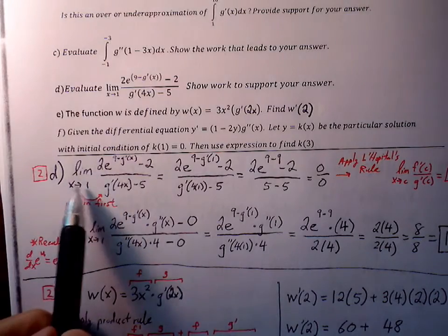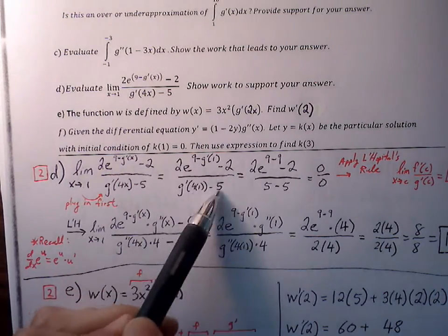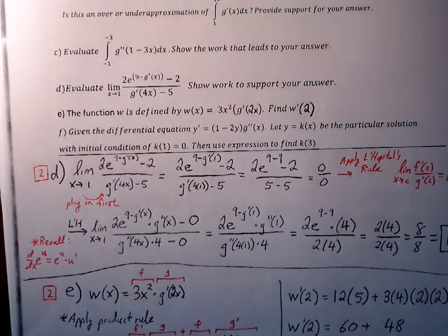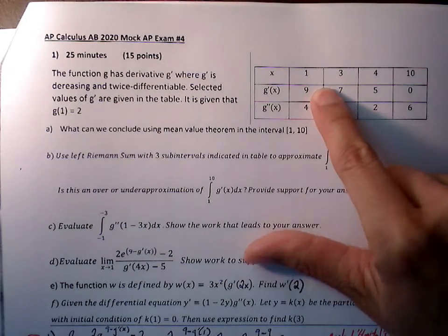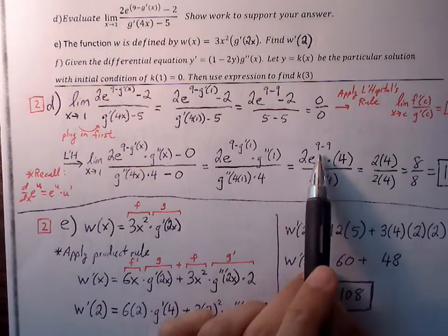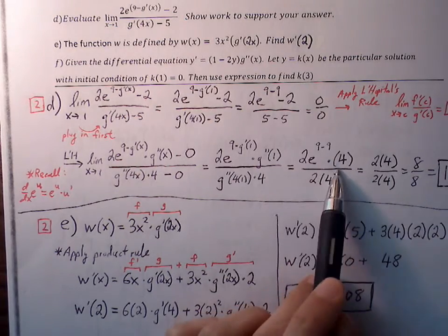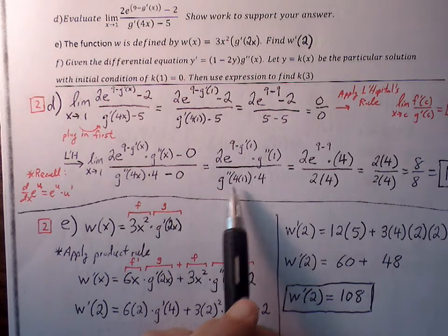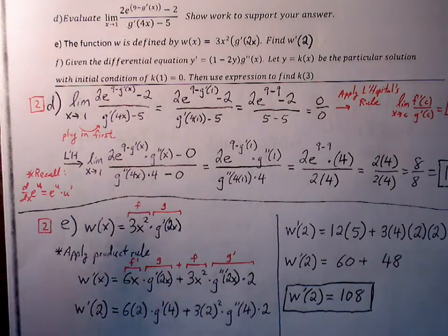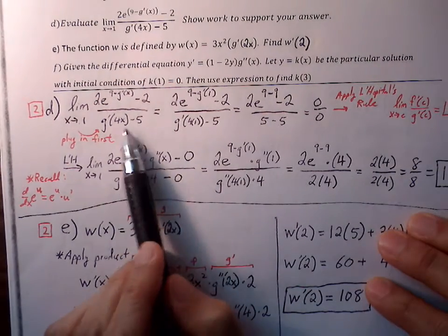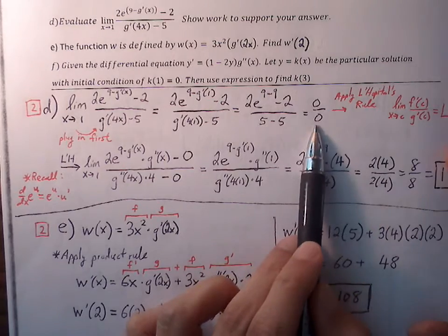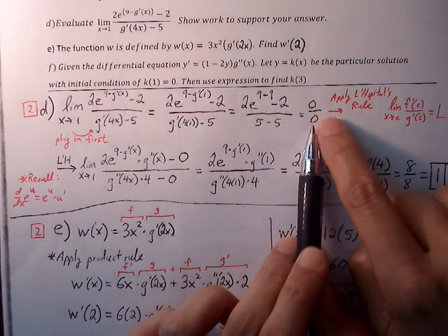Plugging one in for all x's: we get nine minus G prime of one in the exponent. G prime of one is nine, so nine minus nine equals zero. E raised to zero is one. Two times one is two. Two times four is eight. G prime of four is five, and five minus five is zero. So we get two minus two which is zero over zero. Zero over zero indicates that the limit does exist — we just haven't found the answer yet, and we'll need L'Hôpital's rule since we can't factor this expression.